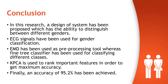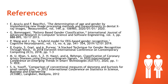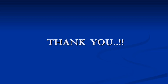In conclusion, a system has been proposed that has the ability to distinguish between different genders. ECG signals were used as input, EMD was used as a preprocessing tool, and a Fine Decision Tree classifier was used for classifying different classes. KPCA was used to select the most important features, which gave us a maximum accuracy of 95.2%. These are the references used in our research. Thank you very much for your precious time and attention.